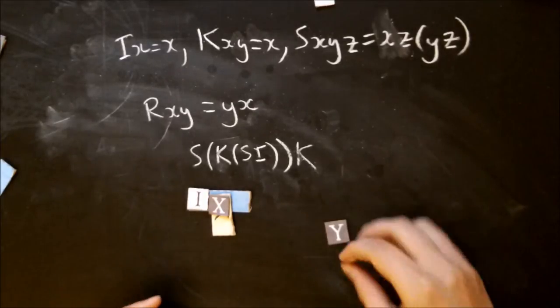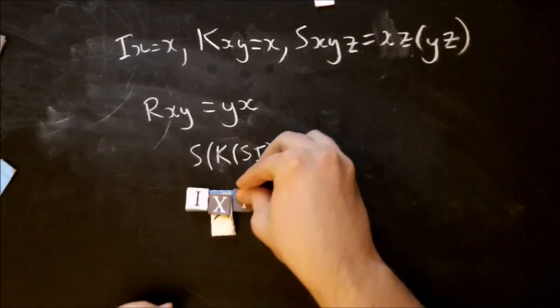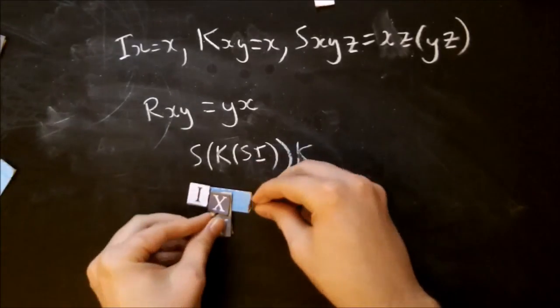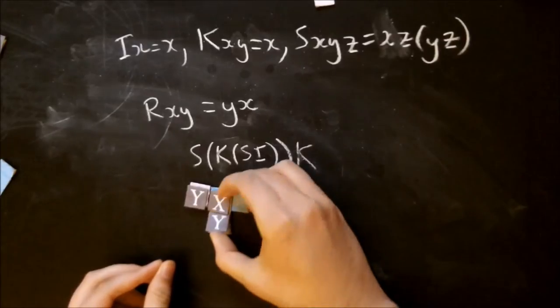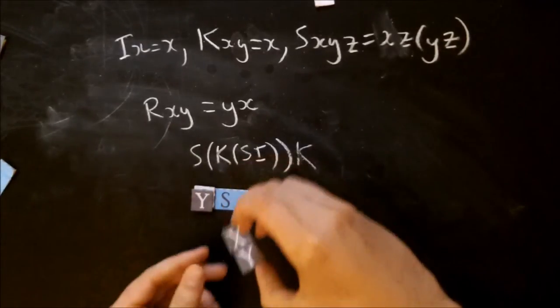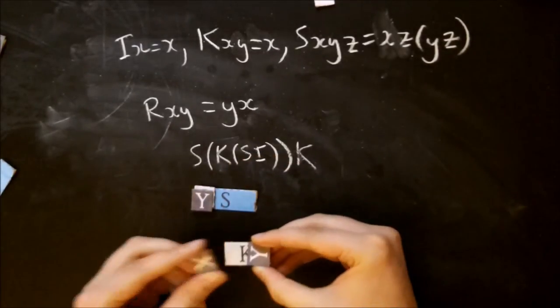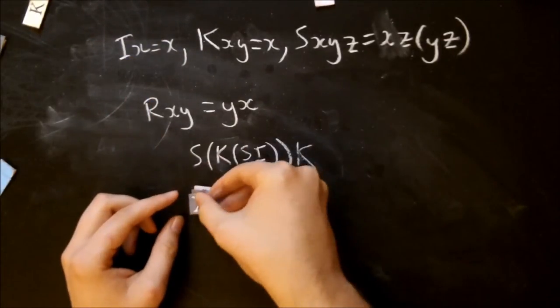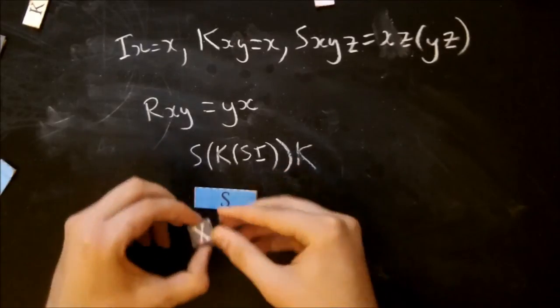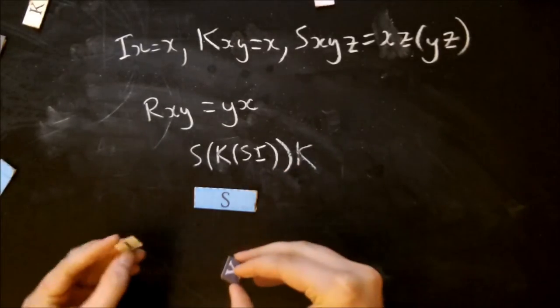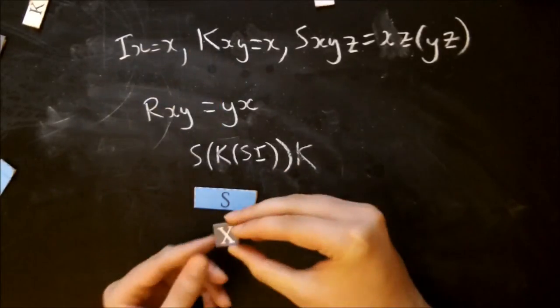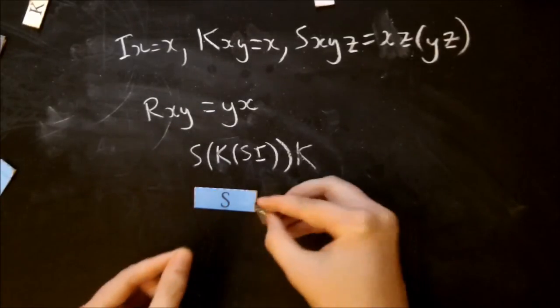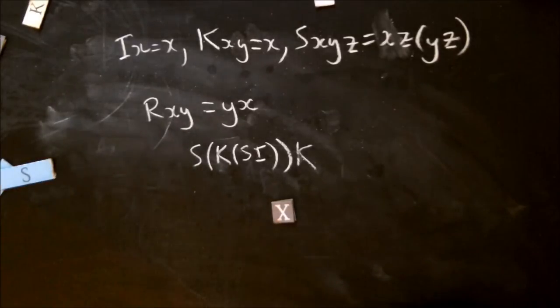So now, if I apply y to it, I should end up with yx. There's y. It's an s combinator, so one goes there, one goes there. That's finished. That's a k. So I get the first one, and I throw the rest away. An x. And I apply it to here. And underneath is an i. Chuck it away. So here we go. I've got y, x. So it works.